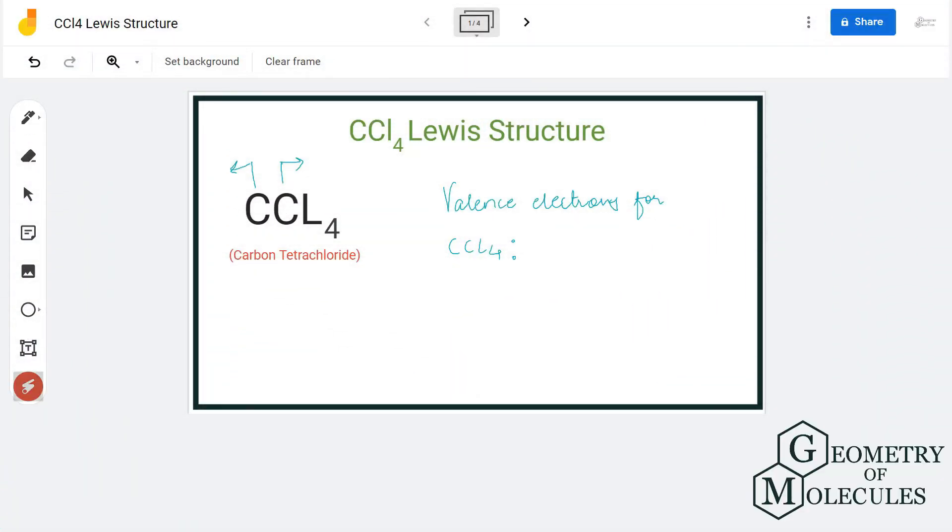Hi guys, today in this video we are going to look at the Lewis structure for CCl4. It's the chemical formula for carbon tetrachloride, and it is made up of one carbon atom and four chlorine atoms.